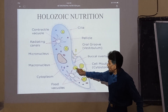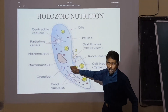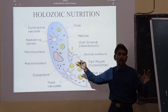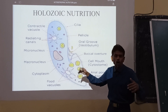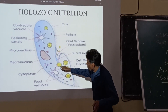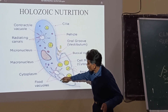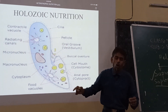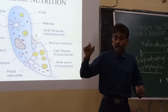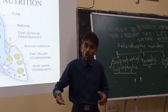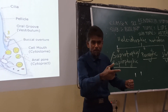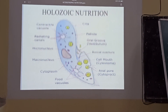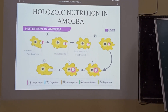Within the food vacuole these food materials enter and the process of digestion takes place. Once digested, the food enters the cell where it is absorbed, then assimilated — utilized for the body's energy. Undigested food comes to the cell surface and exits the body. We shall now take up the holozoic mode of nutrition from the textbook, using Amoeba as the example, and discuss it in detail.